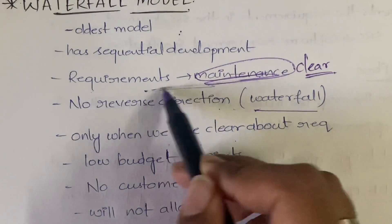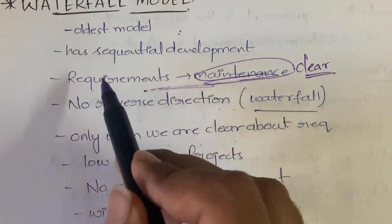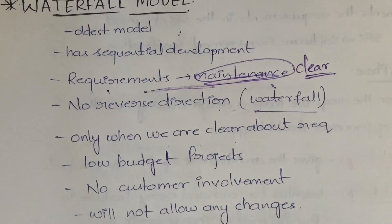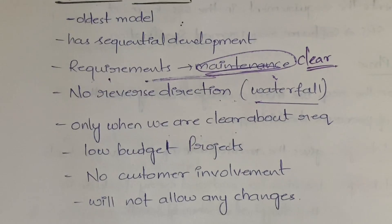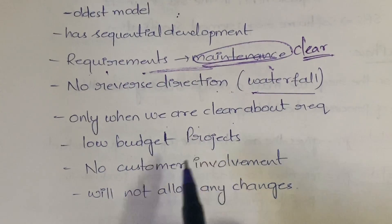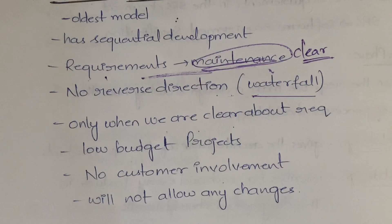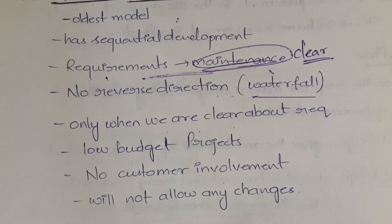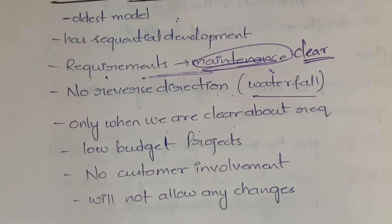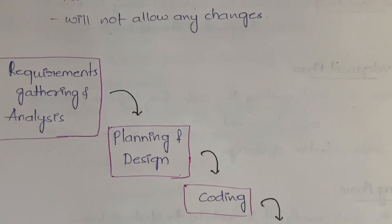This covers requirements phase to maintenance phase. Also, Waterfall Model is used when you have a low budget and no customer involvement. If the customer is involved, they may suggest changes, and to implement those changes you'd have to go back to the previous step — but that is not possible in the Waterfall Model because it does not allow any changes.